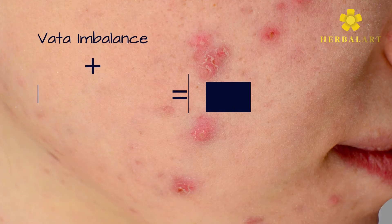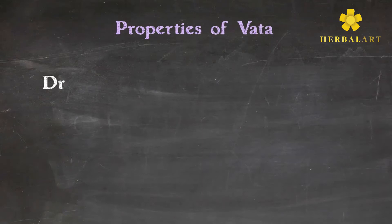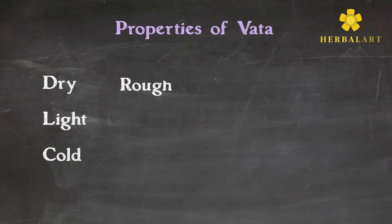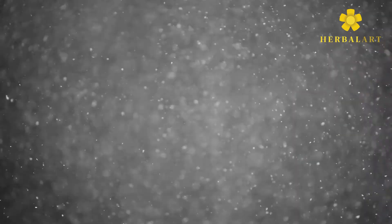According to Ayurveda, there are three major factors for acne: imbalance in vata dosha, kapha dosha, and raktadhatu. Vata and kapha are two metabolic patterns with special properties. Vata dosha is majorly dry, light, cool, rough, subtle, and mobile. So vata dosha increases dryness and mobility inside the body.